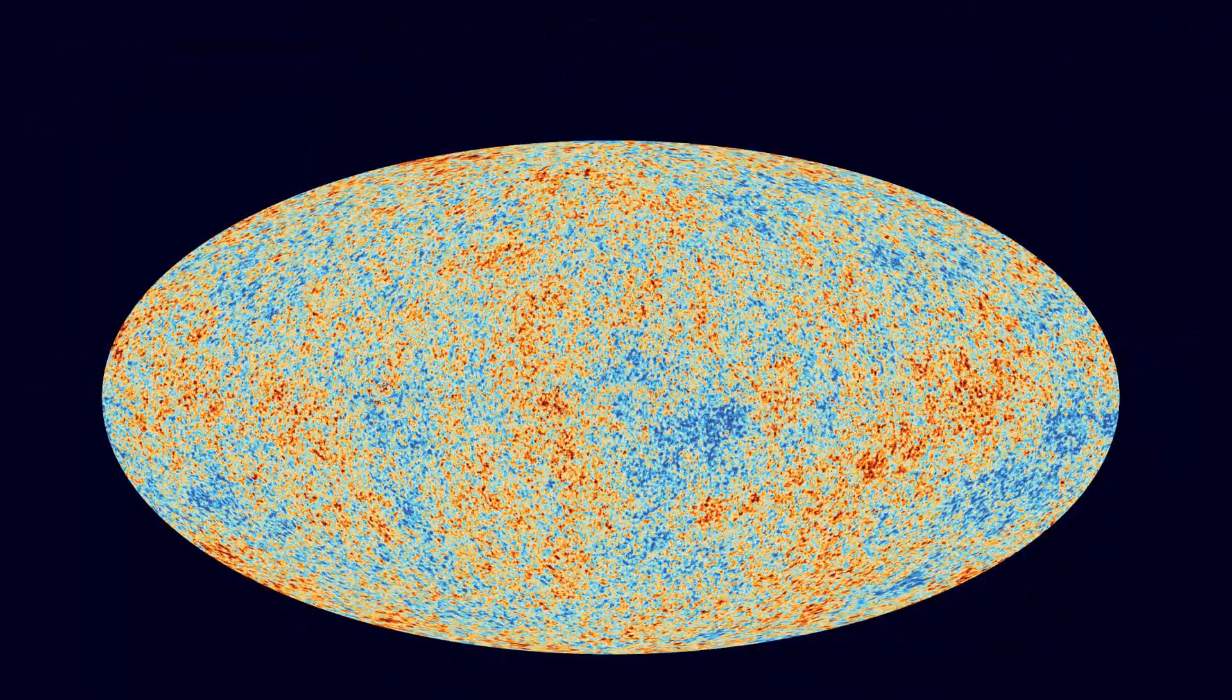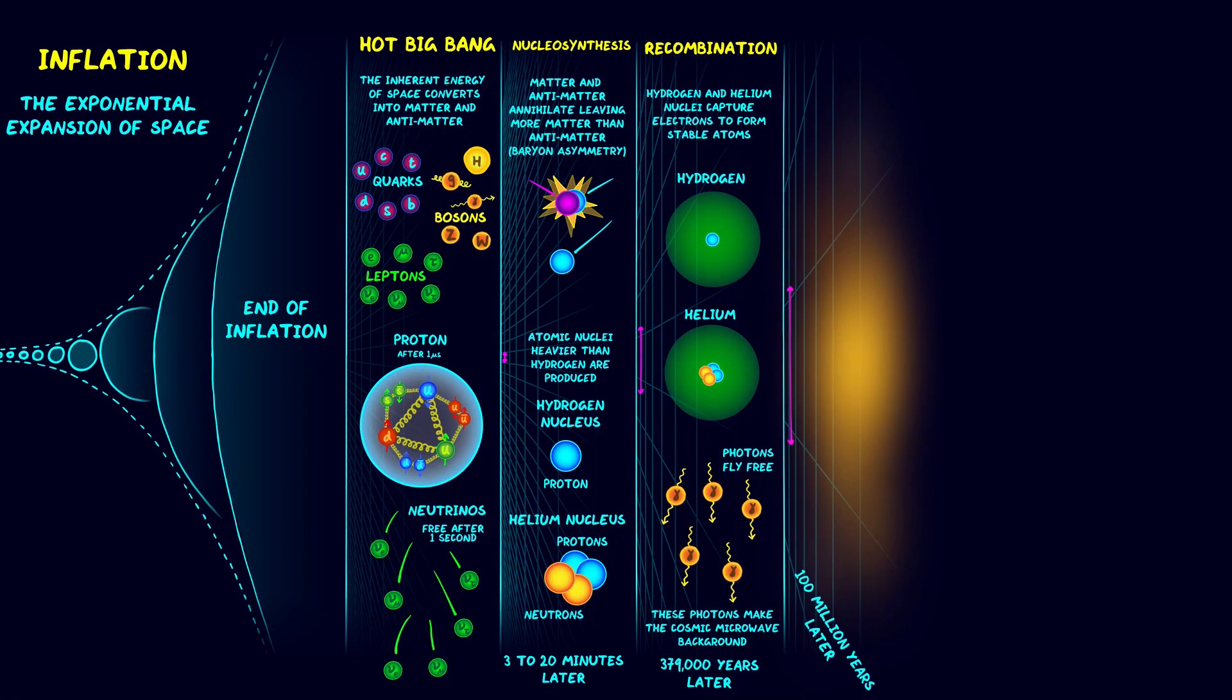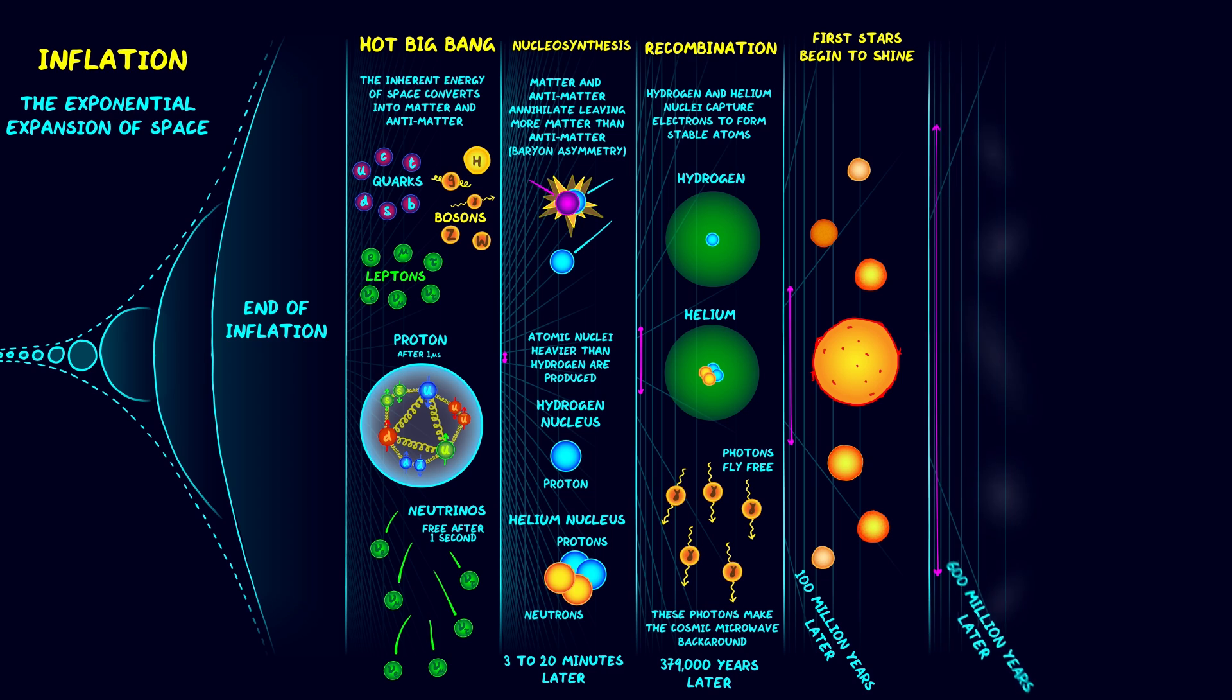We can see these primordial photons today as the cosmic microwave background. After that, the universe behaves in a more familiar way to us. Slight unevennesses in the distribution of matter means that gravity pulls matter into clumps, which after about 100 million years get dense and hot enough to start nuclear fusion and the first stars shine. Then, 600 million years later, the first galaxies form out of collections of stars.